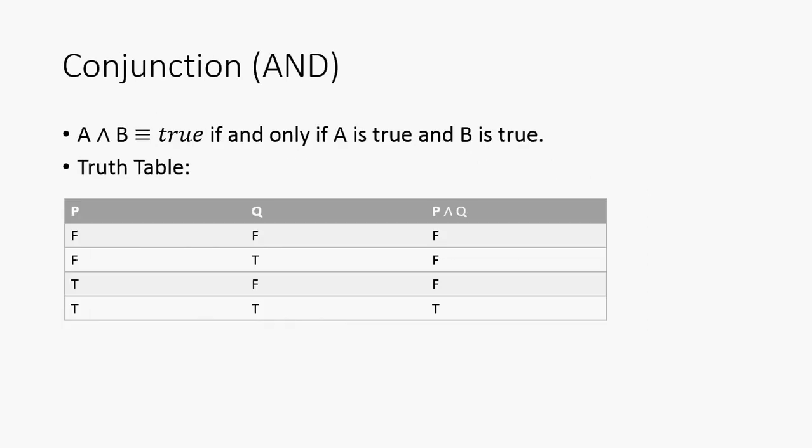So, now we're going to talk about the conjunction, or AND. So A and B is true if and only if A is true and B is true. So, to illustrate this, I made what's called a truth table. It's a table of values to show the results for each combination of inputs.